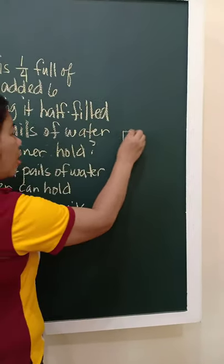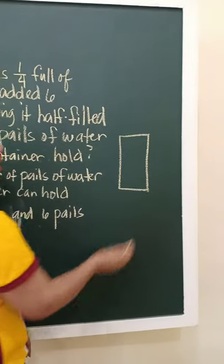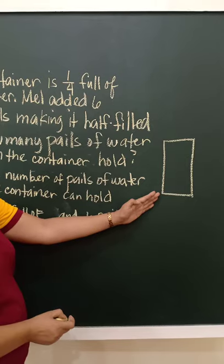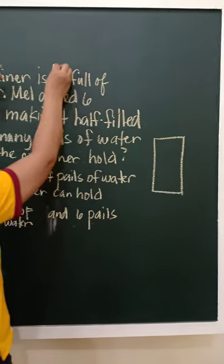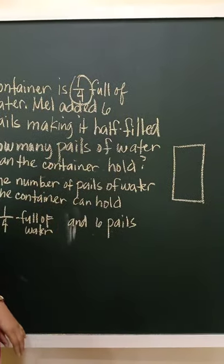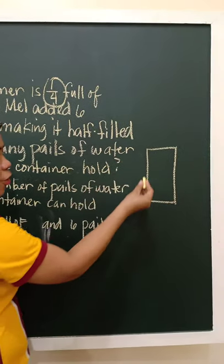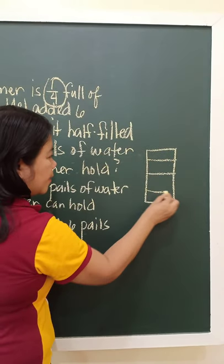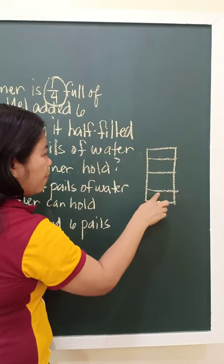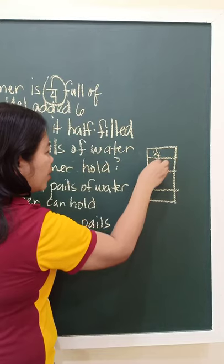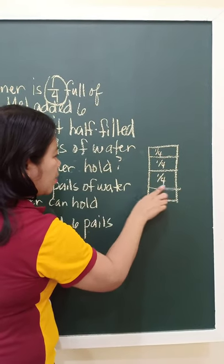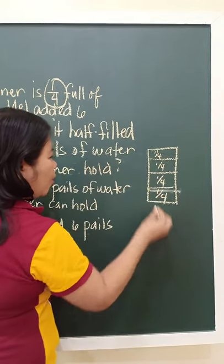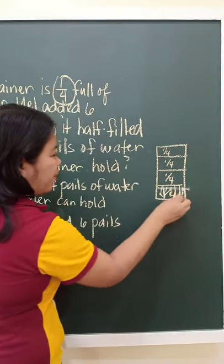I'm going to draw a rectangle. This rectangle represents the container with water. Since the fraction mentioned is one-fourth, it already has one-fourth initially, so I'll divide the container into four equal parts. One, two, three, four. So, this is one-fourth, one-fourth, one-fourth, should be equal. Then, one-fourth. It has water, one-fourth fill.